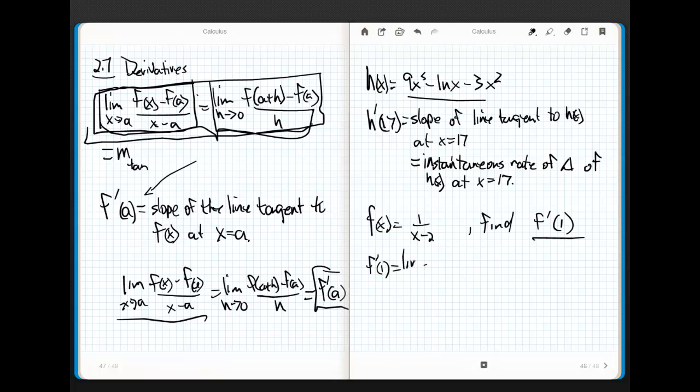I'm going to take the limit as x approaches 1, remember, that's a, of f(x). So I got 1 over x minus 2 minus f(1). I better find f(1). So f(1), because the formula requires it, see this is f(a), f(1) appears to be negative 1. So this is minus negative 1 all over x minus 1.